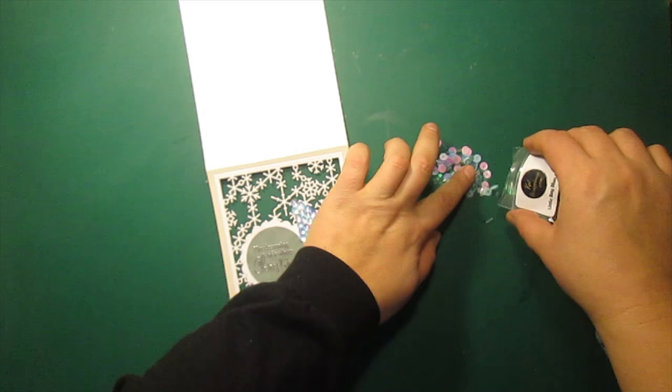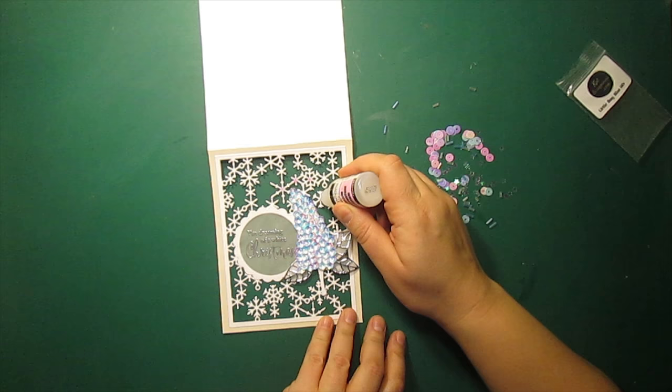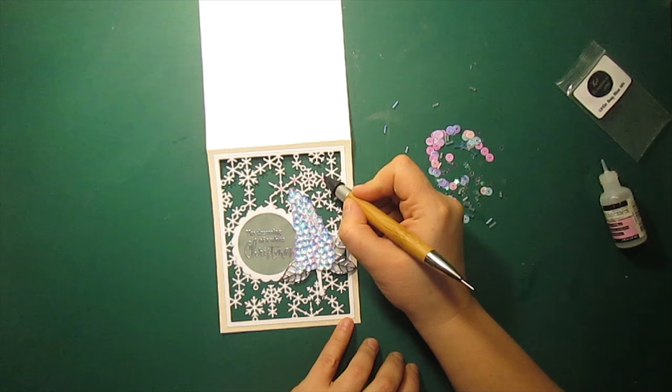This sequin mix is called little boy blue. It has different sequins and seed beads in it, but I'm only going to use the tiny shiny stars to attach to the center of each snowflake.